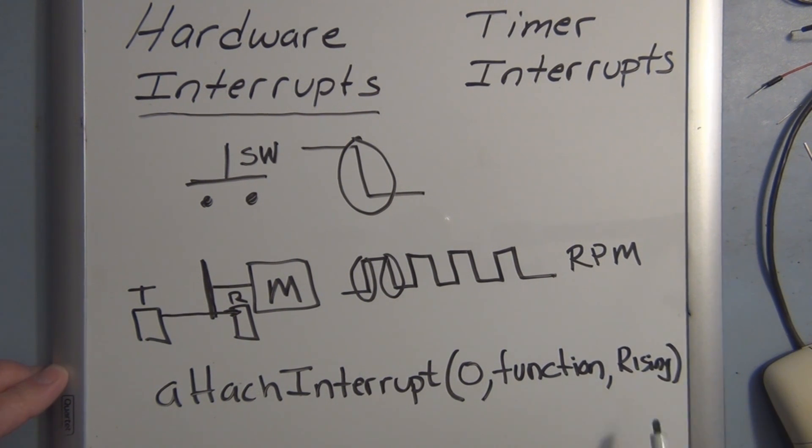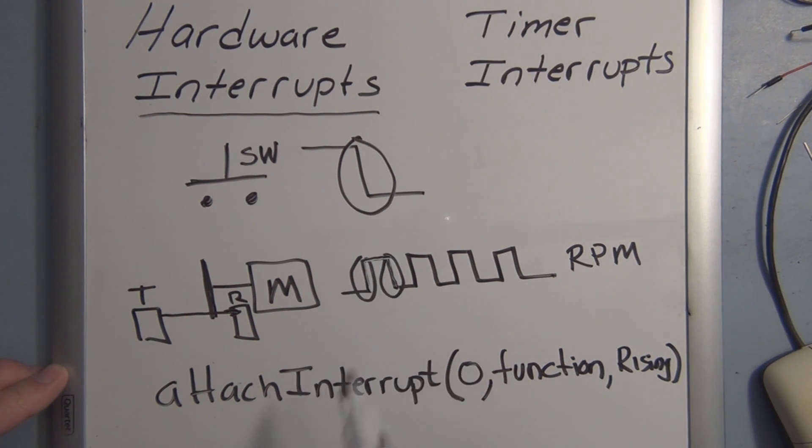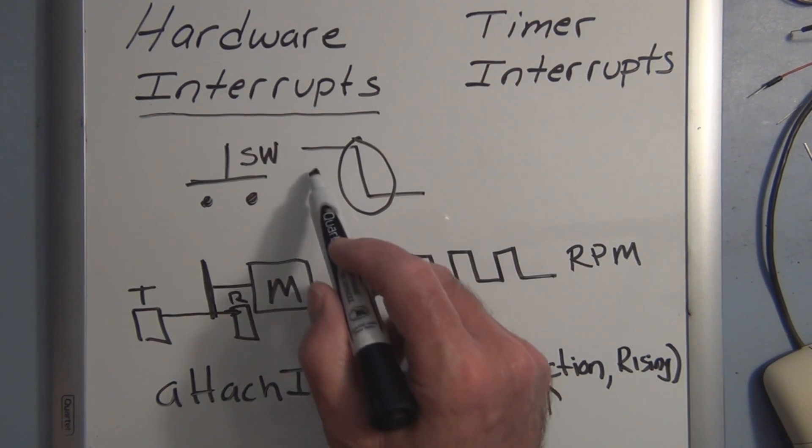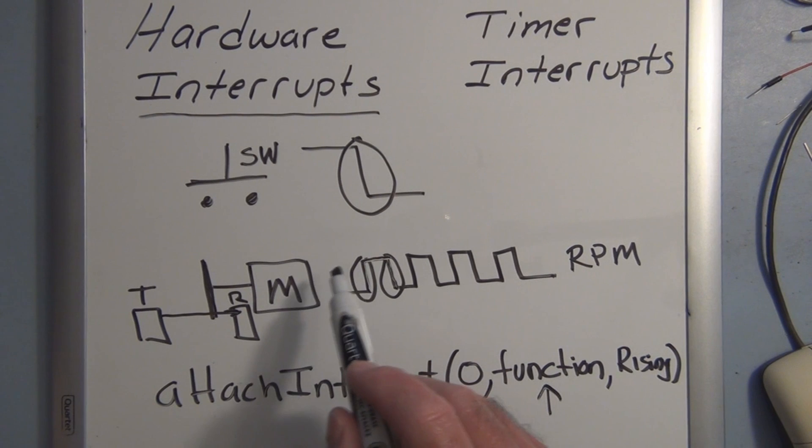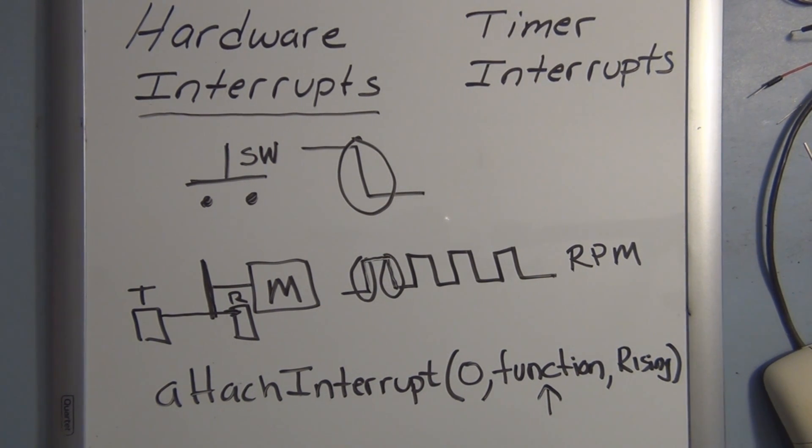So whenever the rising edge of a pulse occurred or a state change from low to high, this function would get called. It would interrupt the normal flow of the program, go run that function, and then come back and start where it left off.